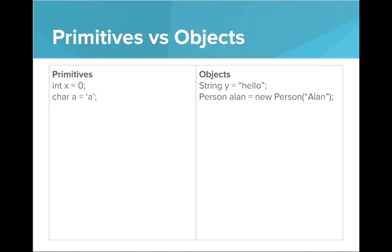We've been using primitives and objects a lot in our Java programs, but we don't know too much about the differences between them. With primitives, the type is written in lowercase — lowercase int, lowercase char, lowercase boolean, lowercase double. When initializing these variables, we can just write the literal value, like zero or the character 'a'. With objects, we have capital letters for the type — capital String, capital Person — and with the exception of String, we have to use the new keyword to make a new object. We are constructing a new object. The reason we don't need it with String is because Java puts it in behind the scenes.